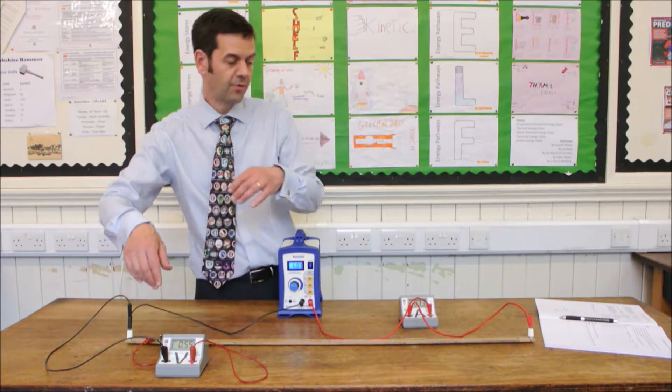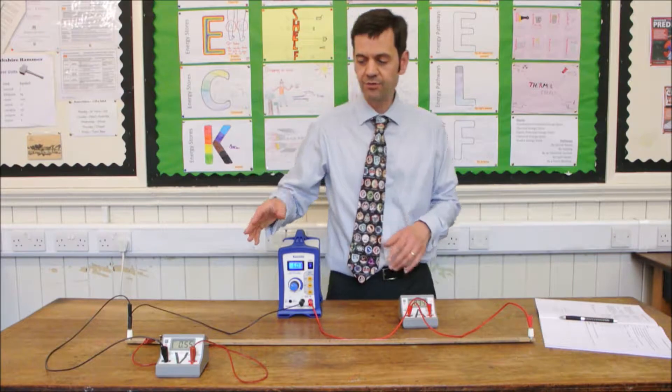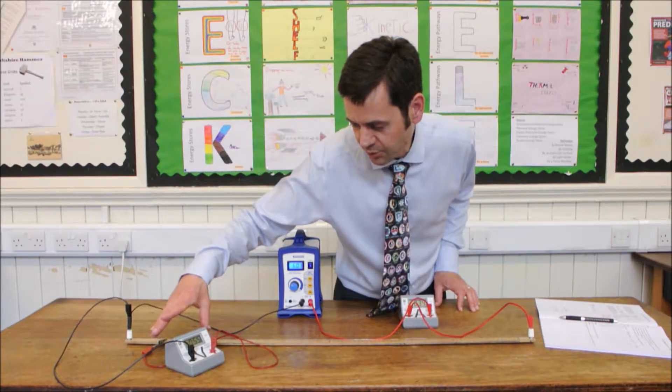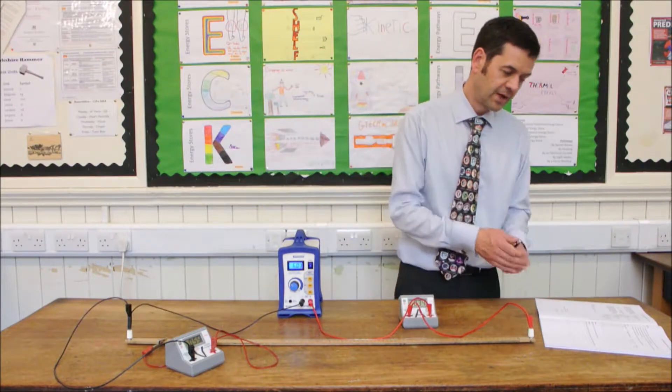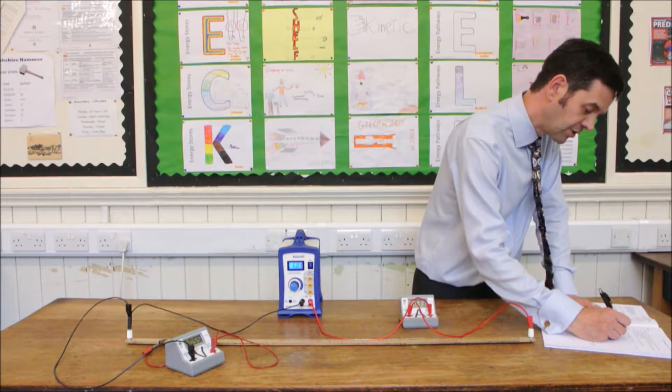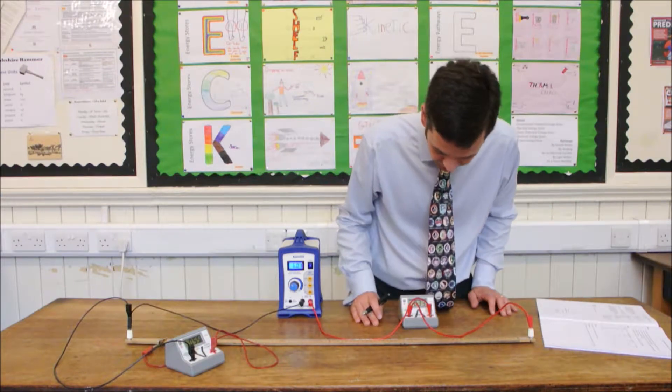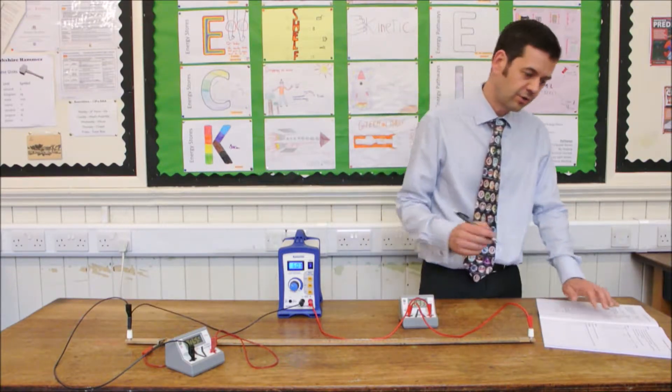And from that I'm going to take a reading of the potential difference from the voltmeter, which we have 0.55, and we're going to measure the current from the ammeter, and that's 0.33 amps.